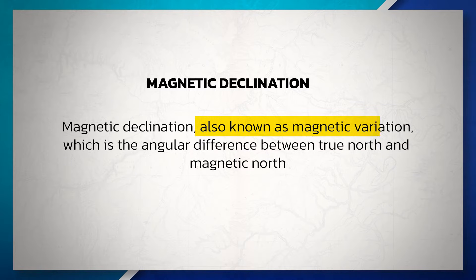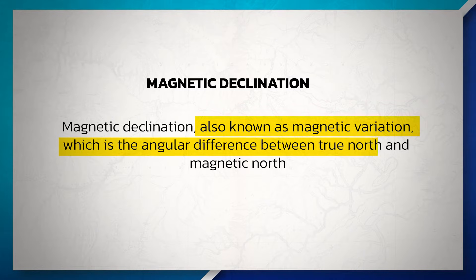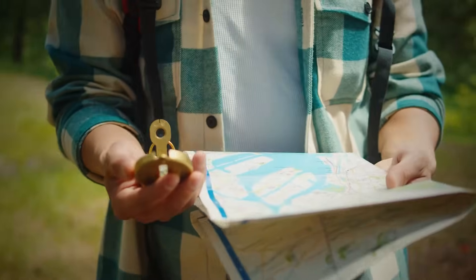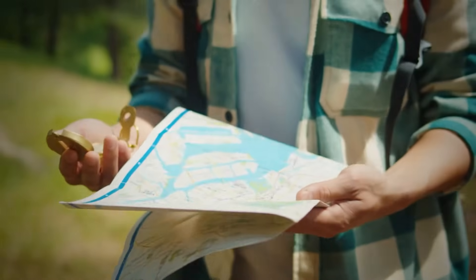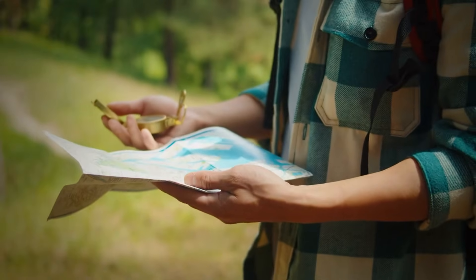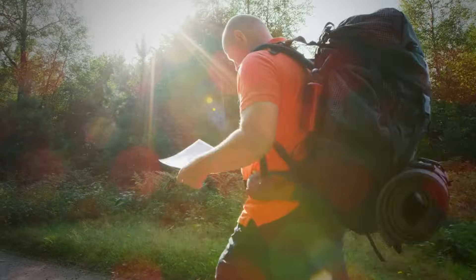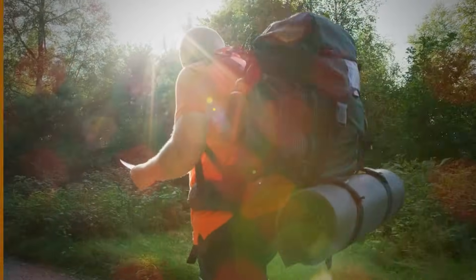You can also find the magnetic declination, also known as the magnetic variation, which is the angular difference between true north and the magnetic north. This will help you align your compass to account for the magnetic declination when determining the correction in direction.